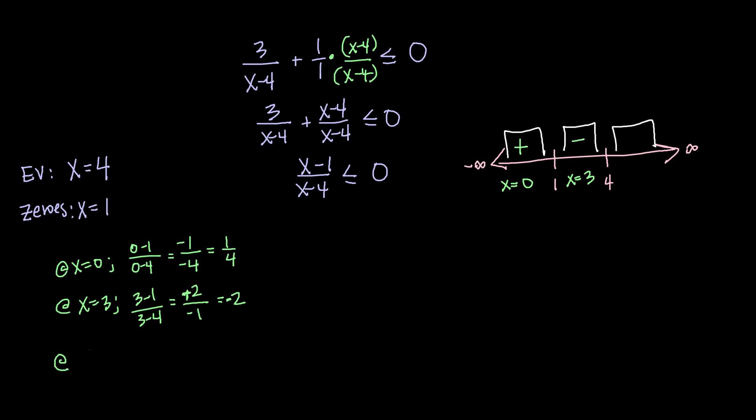And above four, let's say x equals five. Then five minus one over five minus four is going to give me a positive four over a positive one to make a positive.